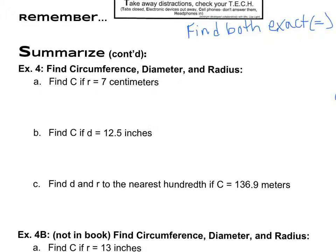Approximate answers are going to have the squiggle equal sign, so just be aware that you're going to need to find both.